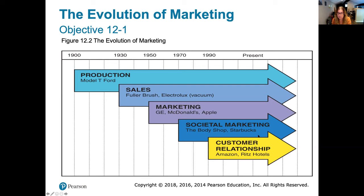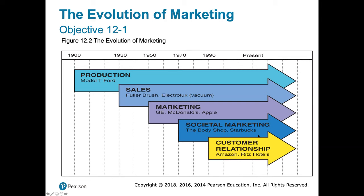Then we have the customer relationship era, which is more recent. Examples include Amazon and the Ritz-Carlton hotels, which are owned by Marriott. This era focuses on building a relationship with customers — the more they know about us as customers, the better they can serve us. This has been made possible partly because of technology since the nineties. The more information they find out about us, the better they can develop products we like, deliver them at the time and place we need them, at the price we need.